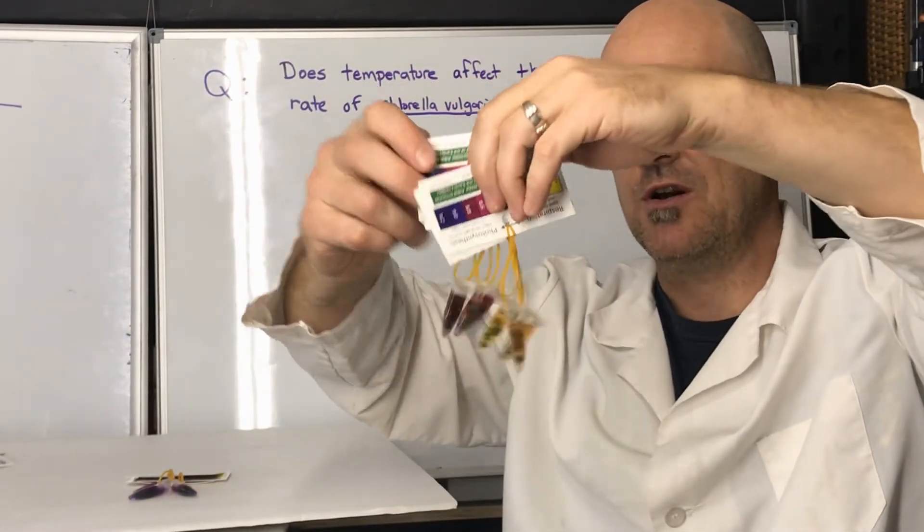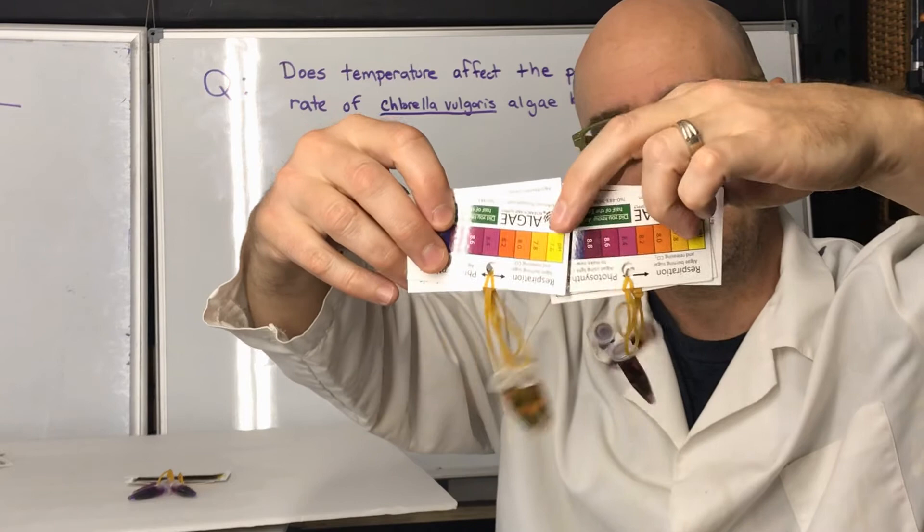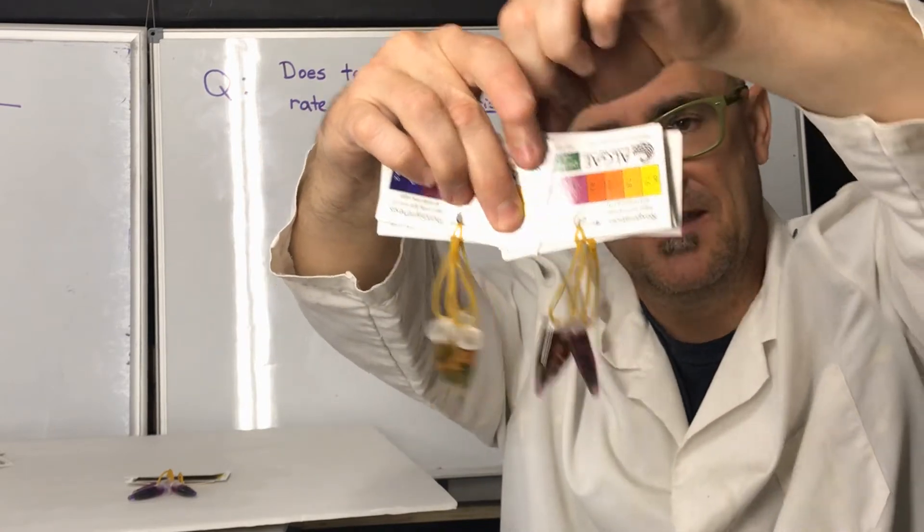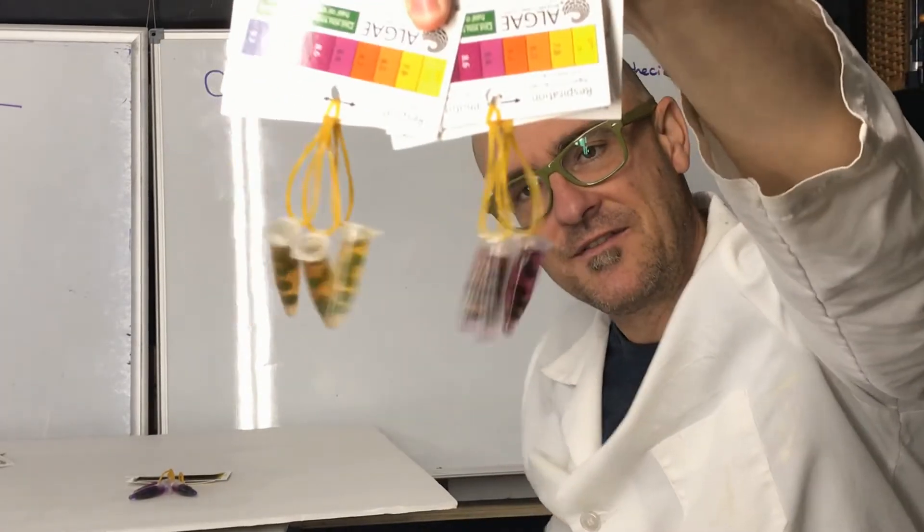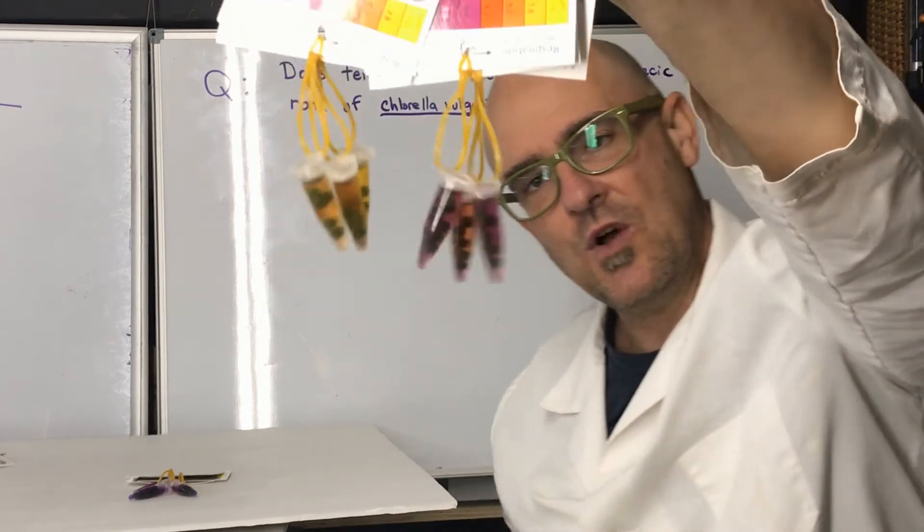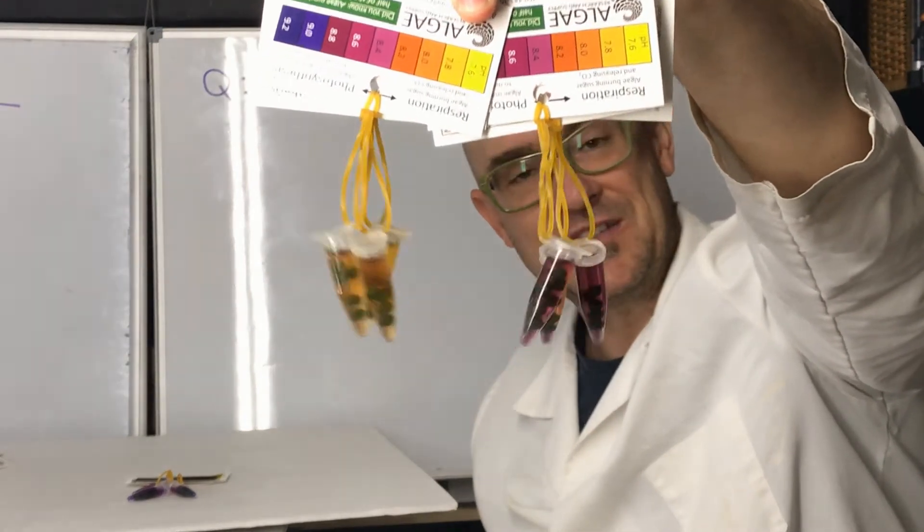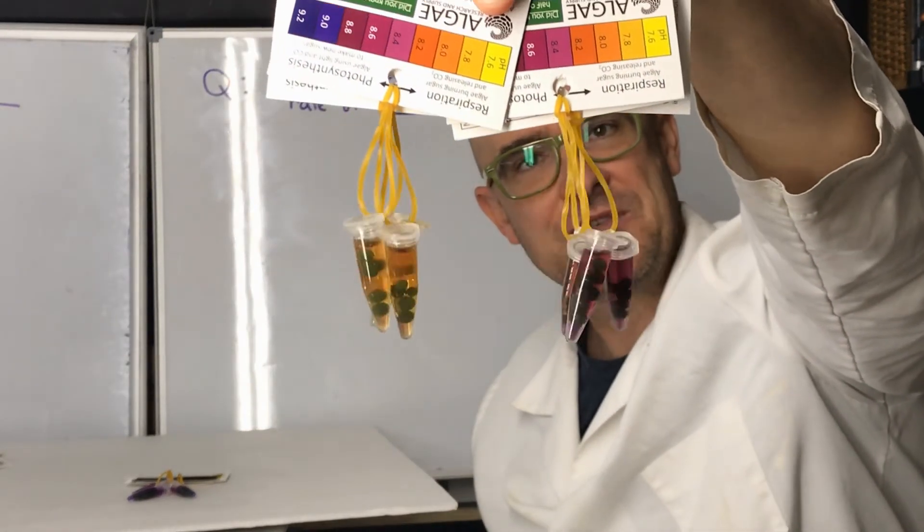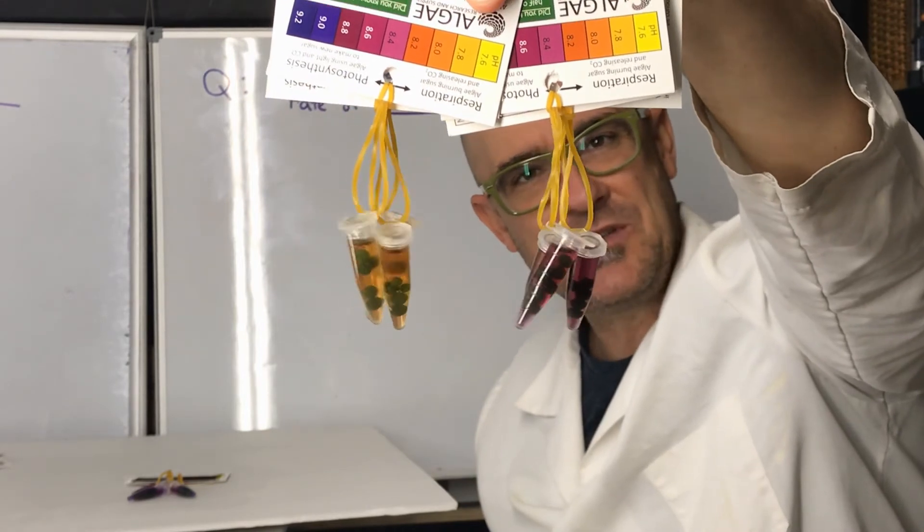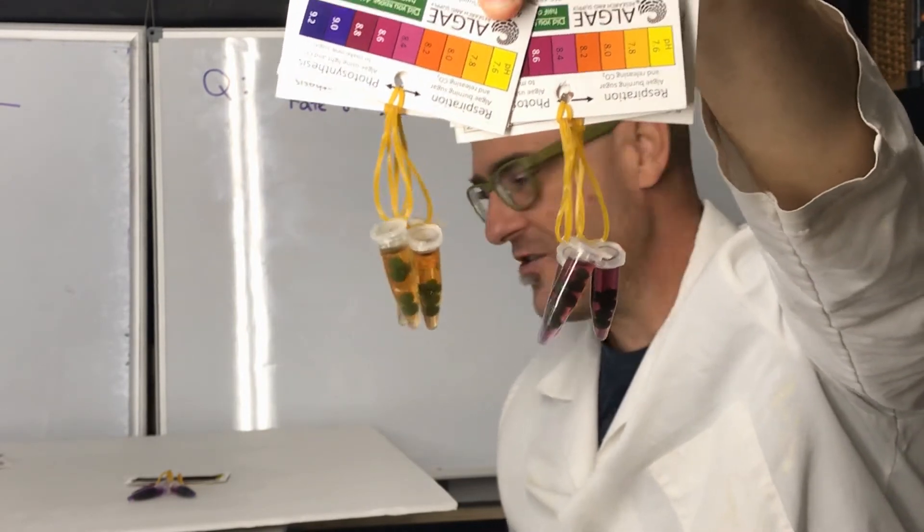For the room temperature, those ones, photosynthesis did occur. Well, photosynthesis occurred in the first one too, but this one the rate was a little bit higher. This one got the pH up to somewhere in the 8.2 to 8.4 range.